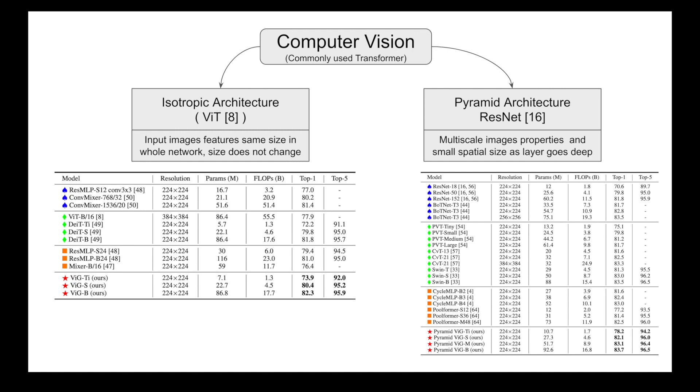It means those images do not change. They stay the same during the network. So VIG Vision GNN was created for the isotropic architecture as well as the pyramid architecture. And the VIG has three different configurations: TI for tiny, S for small, B for big. So out of these three different network configurations, here is the performance against other similar networks in both isotropic architecture as well as the pyramid architecture.